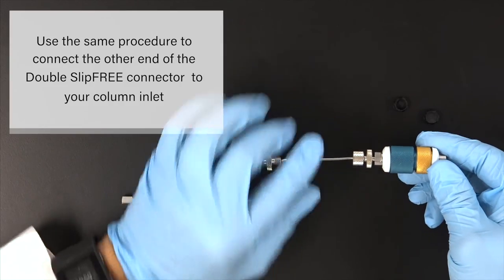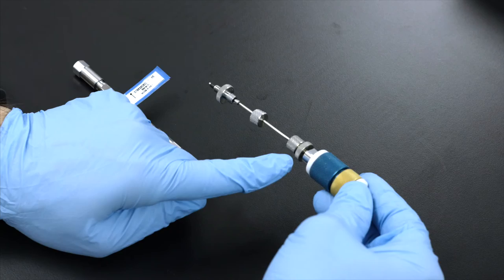Use the same procedure to connect the other end of the double-slip free connector to your column inlet.